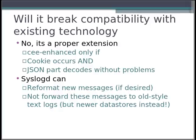It's also important to understand modern Syslog design to see how this works, and on that I have a separate quick talk available. It is a proper extension — it is considered CEE-enhanced only if and only if the cookie occurs exactly at the start of the message and the JSON part decodes without problems. If we see the cookie plus the JSON decodes correctly, it is extremely unlikely that we have a legacy message fulfilling both properties. Even if it did, it wouldn't really matter.